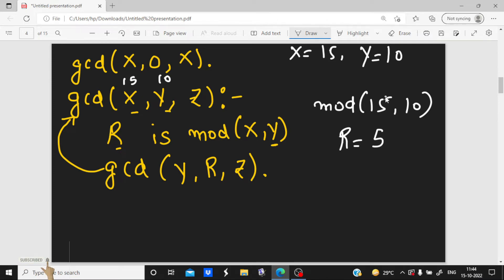So in next step I need to find mod of y, R, and z. So it can be written as gcd(y, y is here that is 10 and R is 5, comma z).